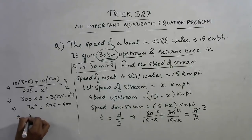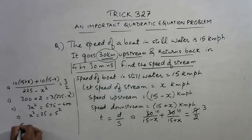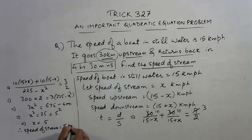So x square comes out to be 75 by 3, that is 25, which we can write as 5 square. So x is 5, therefore speed of stream is 5 kilometer per hour, which is the exact thing which was required to be found out in this question.